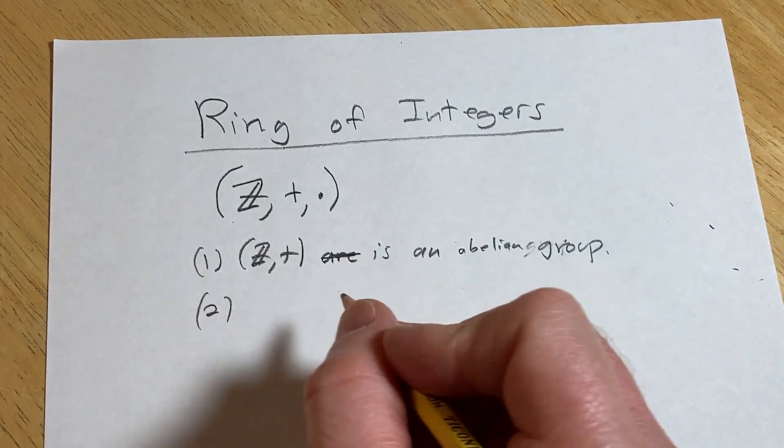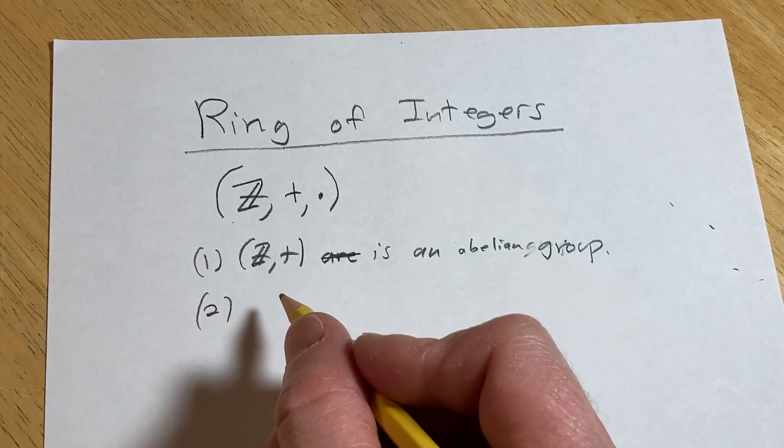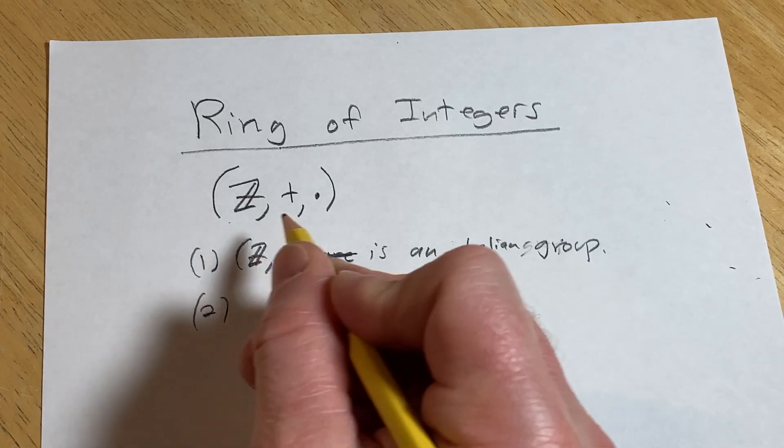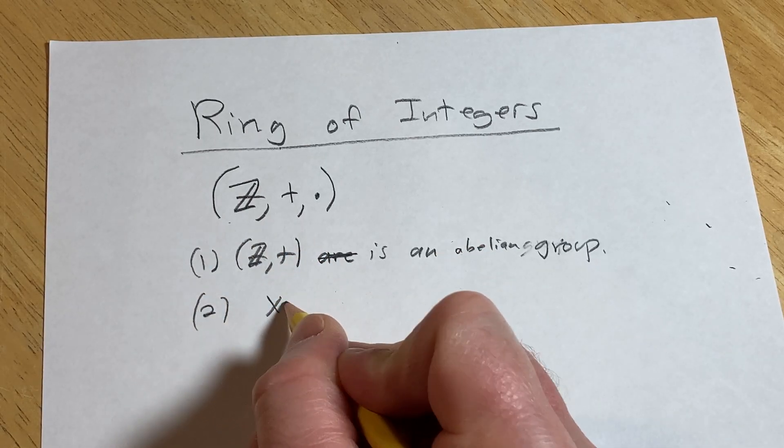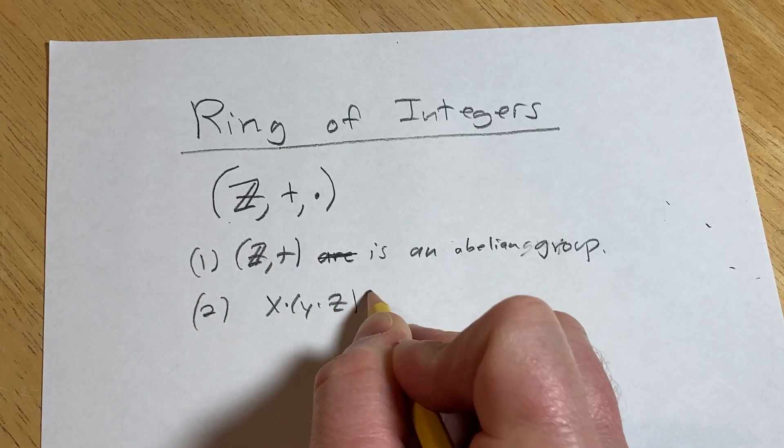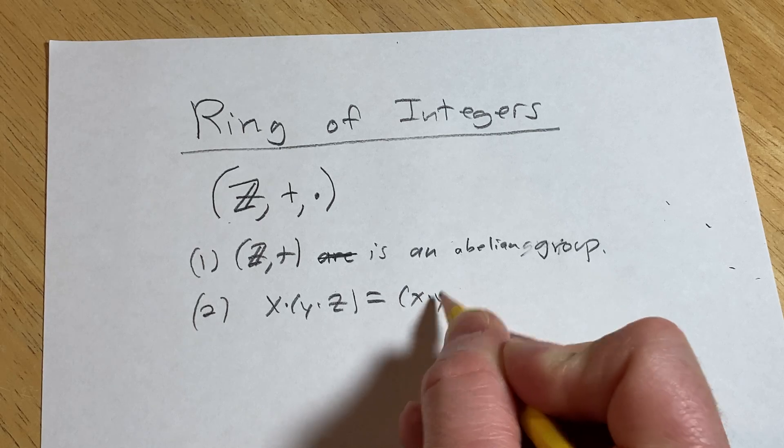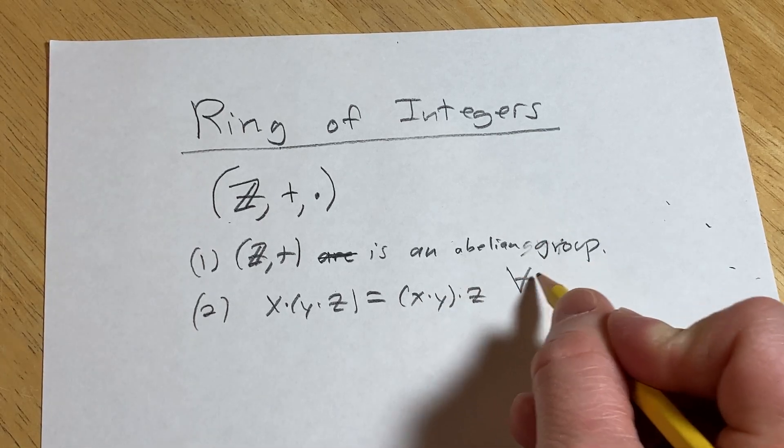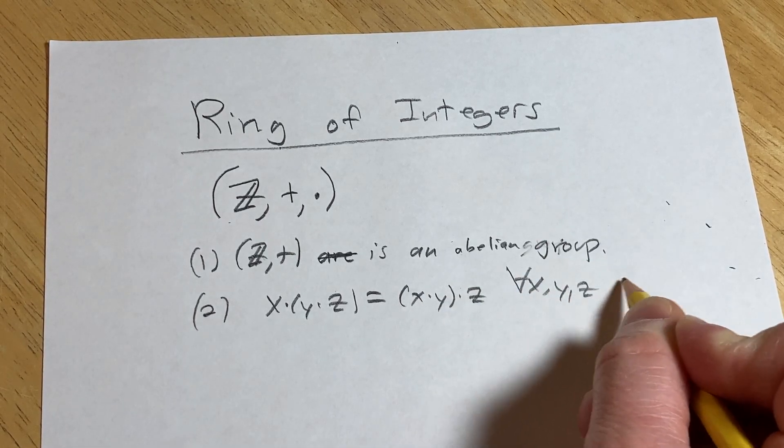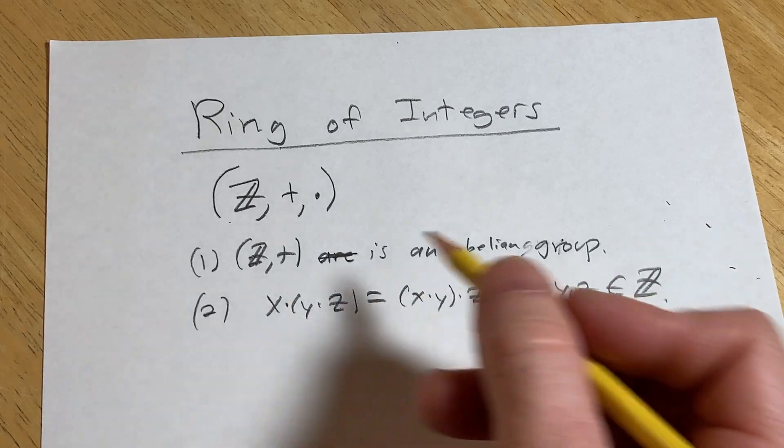Two, the multiplication is associative. So basically that means that you should have, for all integers, x times y times z equals x times y times z for all x, y, and z, which is true, right? I mean, they're integers.